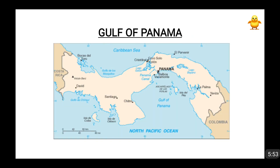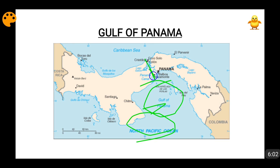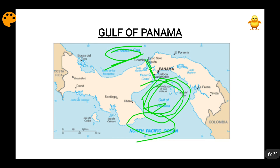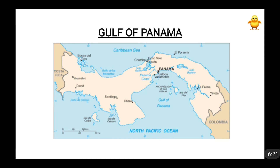Moving forward to the Gulf of Panama. This is a gulf located in the Pacific Ocean. You can see the Panama Canal here, which connects the Caribbean Sea — a part of the Atlantic Ocean — to the Pacific Ocean. So basically, the Atlantic Ocean and Pacific Ocean are joined by the Panama Canal, and the Gulf of Panama is on the Pacific side. I have also talked about the Isthmus of Panama separately when discussing the difference between straits and isthmuses.